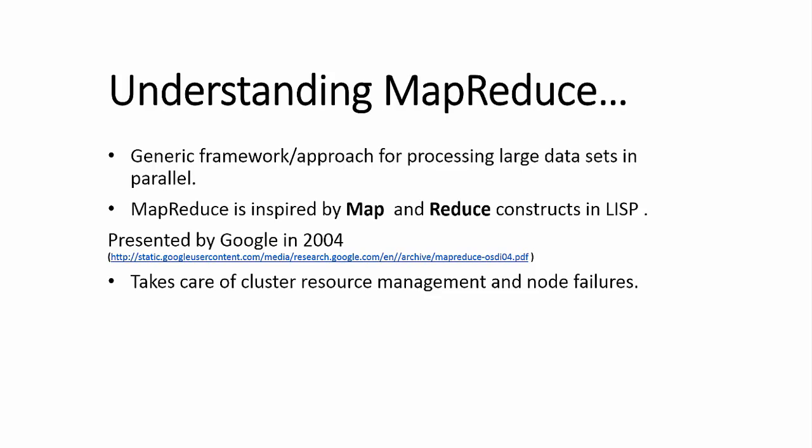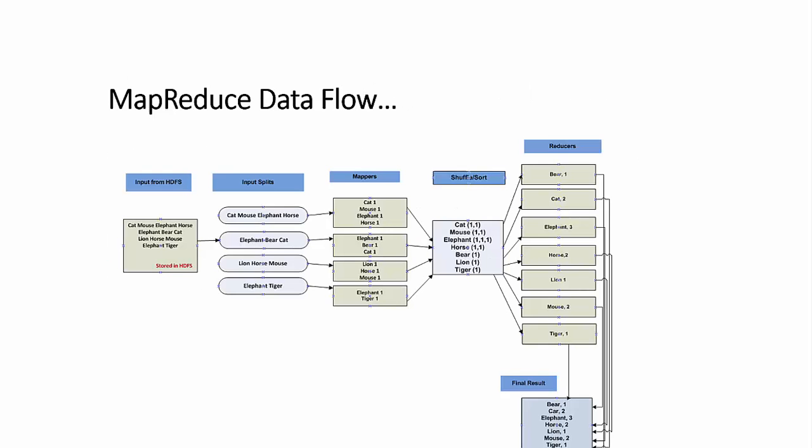A map operation converts the elements of a collection from one to another. In this case, input key-value pairs are converted to zero to many output key-value pairs, where the input and output keys might be completely different, and the input and output values might be completely different.